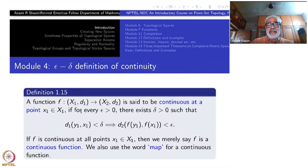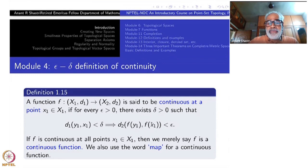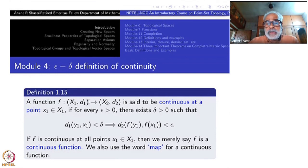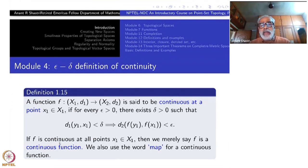Here x1 and y1 are inside capital X1, and I apply d1 to that. That distance being less than delta implies the corresponding distance between f(y1) and f(x1), measured using d2, must be less than epsilon. If this happens for all points x1 in X1, we say f is continuous on X1, or simply f is continuous. Continuous means it is continuous at all points.